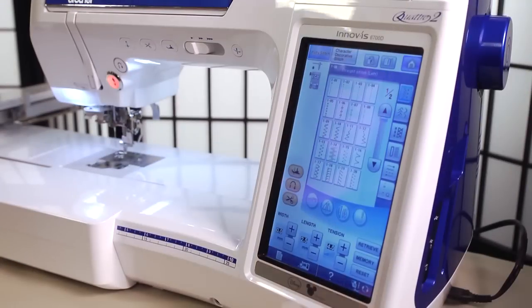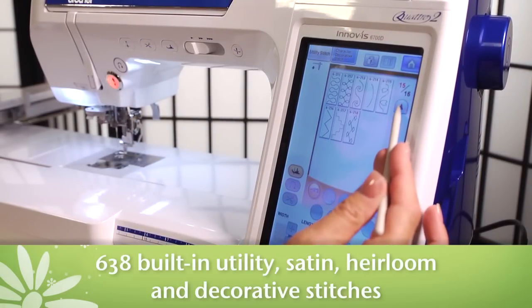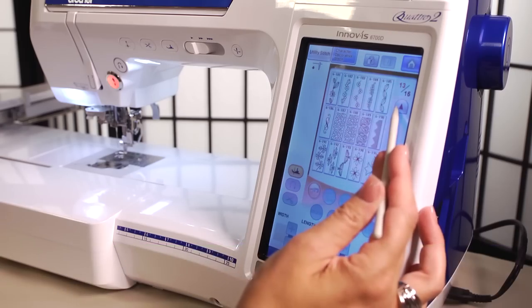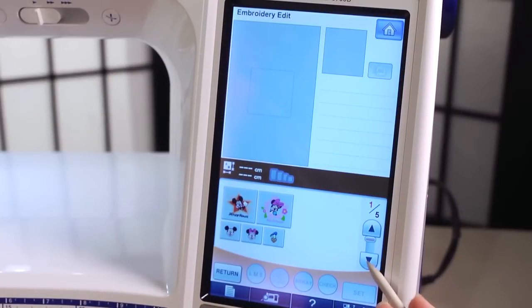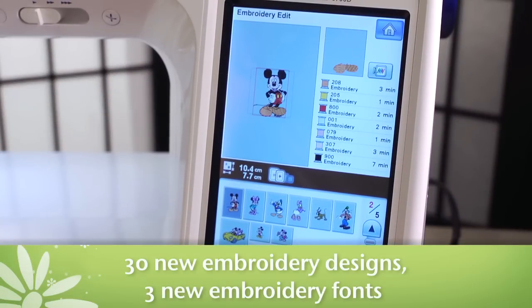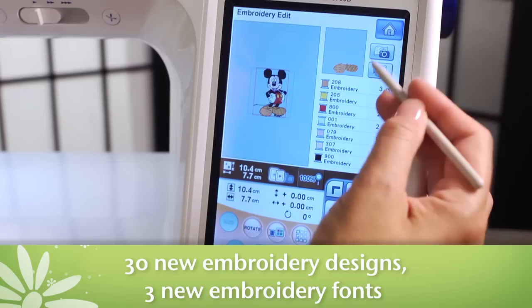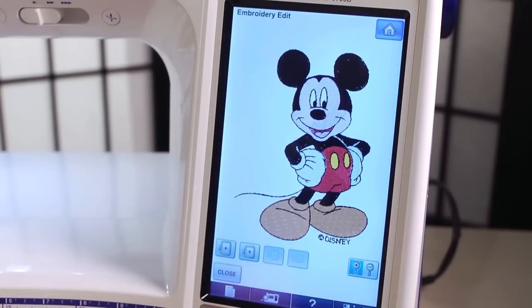Sewers will appreciate the 638 built-in utility, satin, heirloom, and decorative stitches, all of which can be edited to suit your project needs, while embroiderers will delight in the 18 built-in embroidery fonts and 677 built-in embroidery designs, including 180 featuring Disney characters and 14 bobbinwork designs.